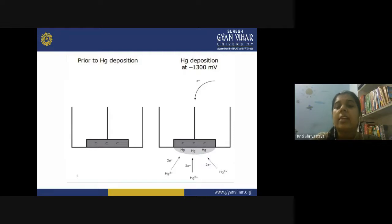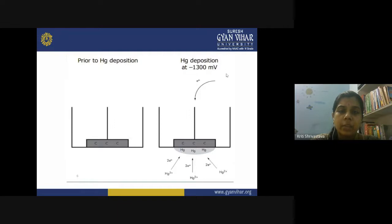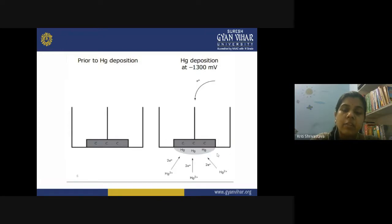From this diagram you can understand stripping voltammetry. This is a carbon-based electrode with carbon atoms on it. Prior to mercury deposition, you take your carbon electrode and apply a layer of mercury over the carbon molecules. When you apply a particular potential, the mercury²⁺ ions from the salt solution migrate to the working electrode acting as a cathode, gain electrons, and are deposited, forming a layer of mercury on your electrode.